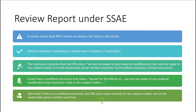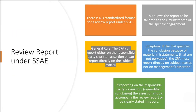Notice the term 'unmodified conclusion,' not 'unmodified opinion,' because no opinion is given in a review. If we don't have an unmodified conclusion, then we could have a modified conclusion, which would state something like: 'except for the effects of, we are not aware of any material modification that should be made to the subject matter.' Note that if there is a modified conclusion, the CPA must report directly on the subject matter and not on the responsible party's written assertion.